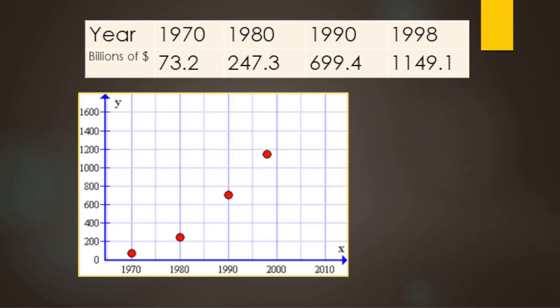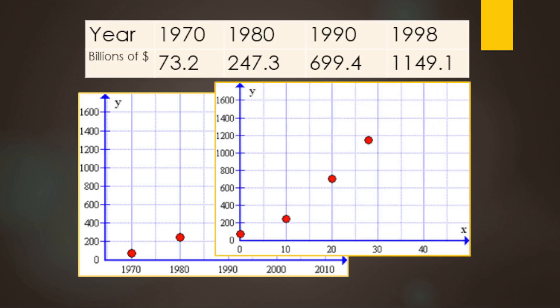You can also fiddle with the variables a little bit. Instead of starting at 1970, you can call that year zero. Then 10 years after would be 1980, 20 years would be 1990, and 30 years would be 2000. That makes a cleaner graph, but you'll have to do some interpretation when you start working with your fitted lines or modeling the data.